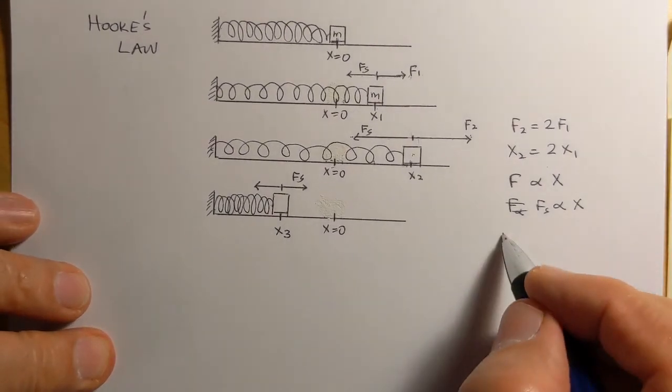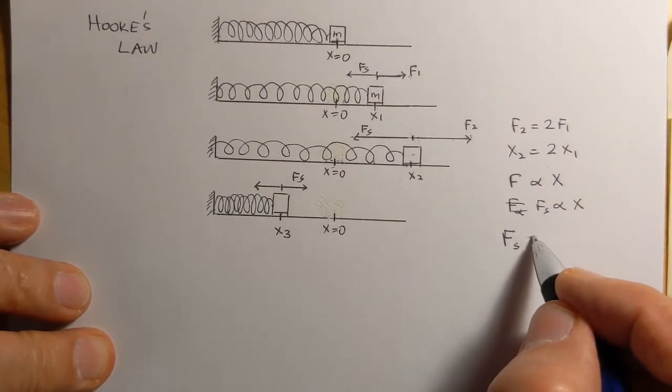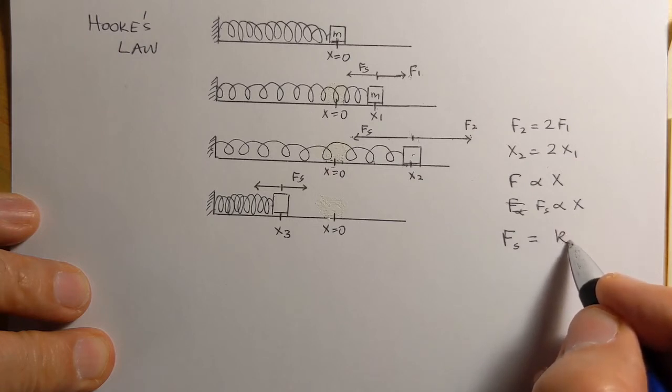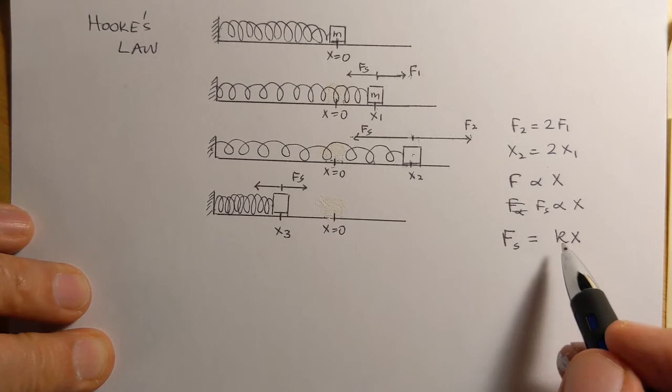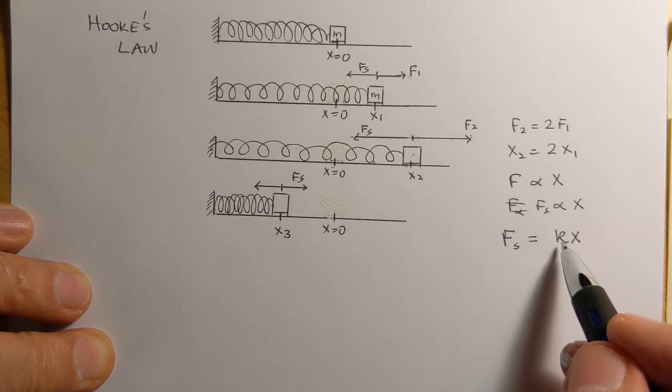We have a proportionality constant, so we can write it as equal, and that constant is written as k. Now this k is the stiffness of the spring.